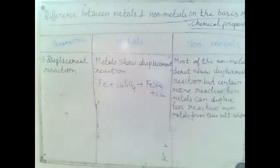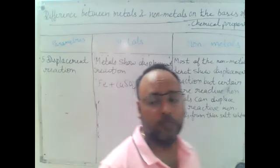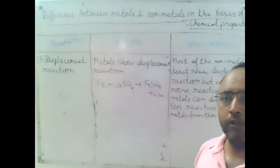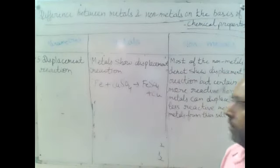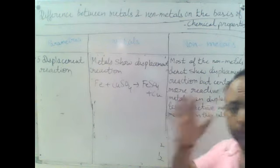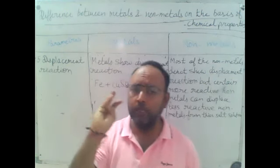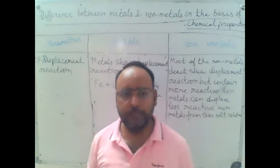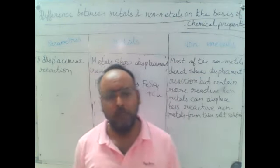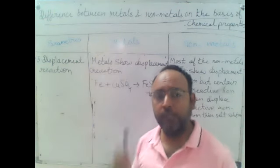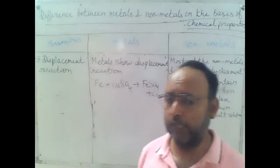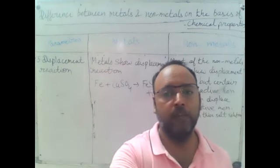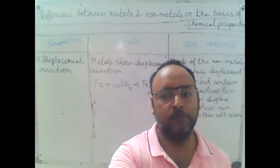So this is all about the difference between metals and non-metals on the basis of chemical properties. We have covered five differences: reaction with oxygen, reaction with water, reaction with acids, reaction with bases, and displacement reactions. I hope this video will help class 8 students learn these differences. In the next lecture we will discuss the uses of metals and non-metals. Thank you so much.